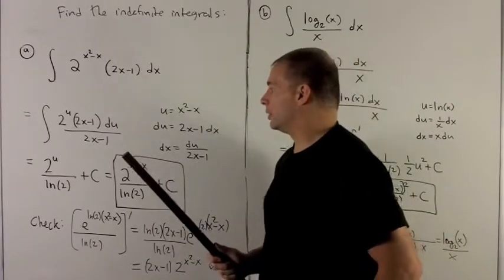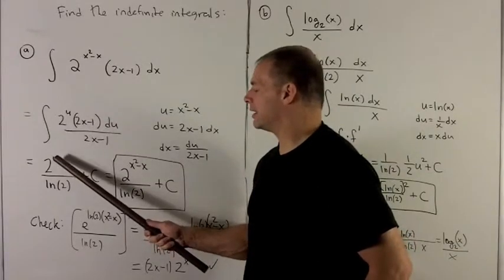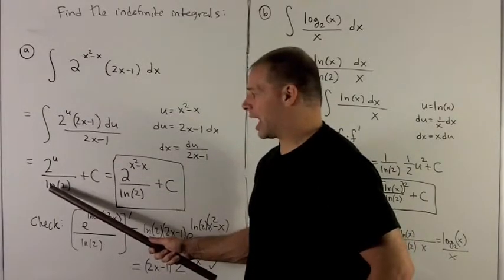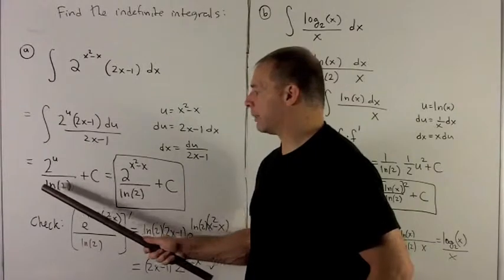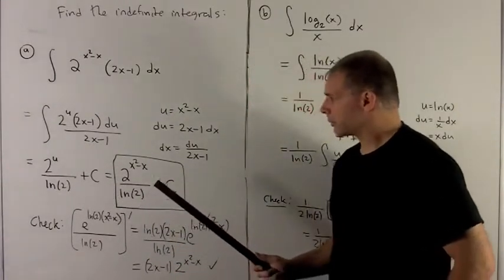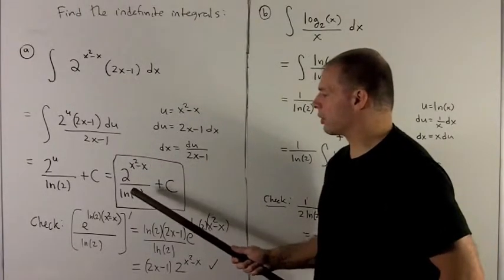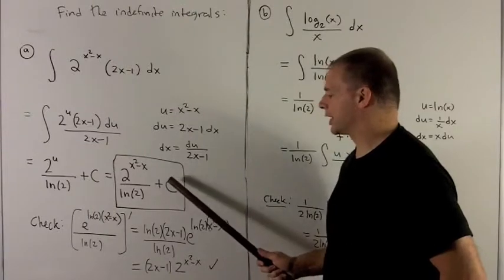The rule for 2 to the u du is to just put your 2 to the u back in, and then divide by the natural log of your base. So we divide by natural log of 2, and then I add my constant. Putting back in for u, I have 2 to the x squared minus x over natural log of 2 plus a constant.